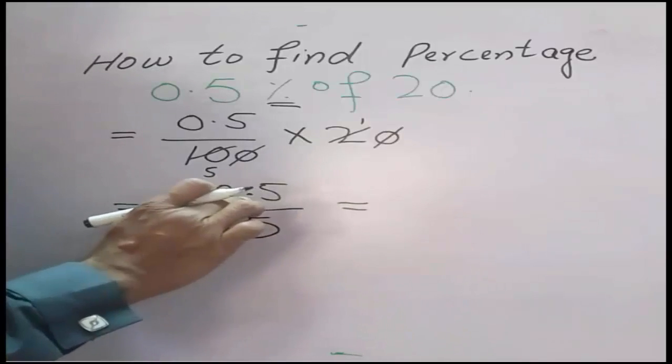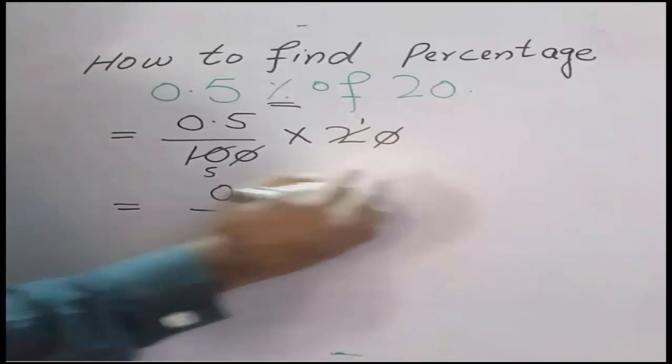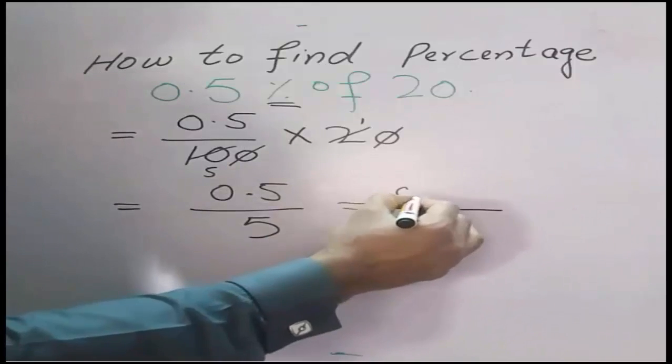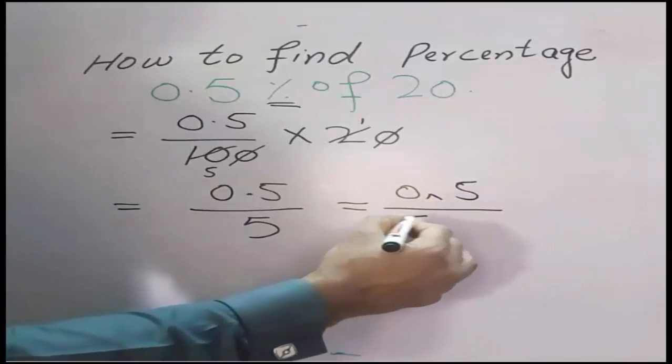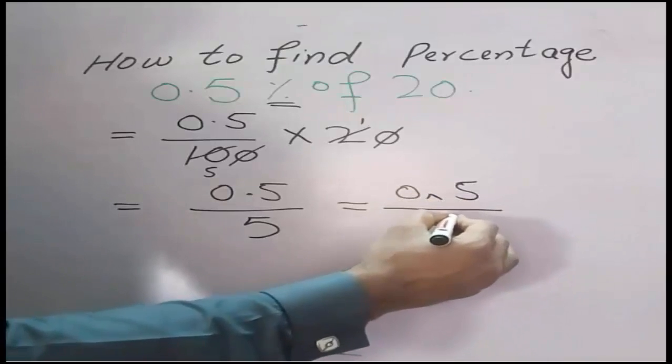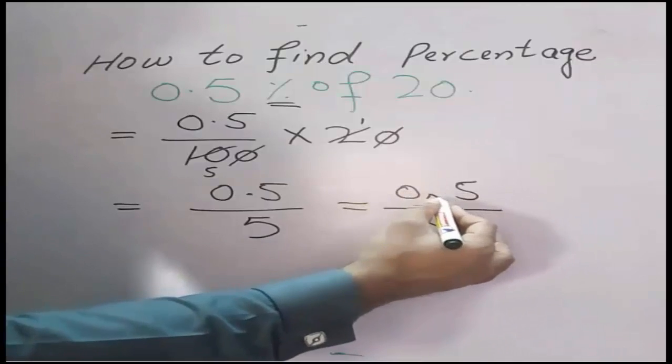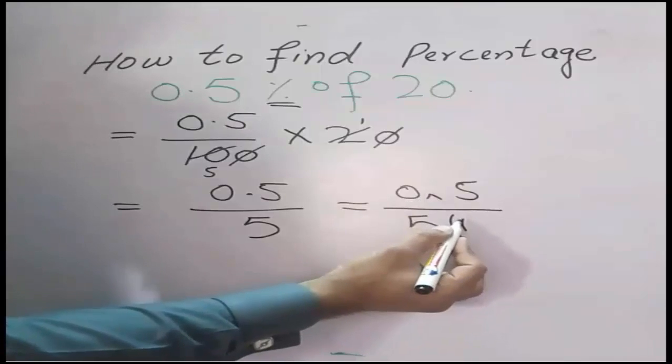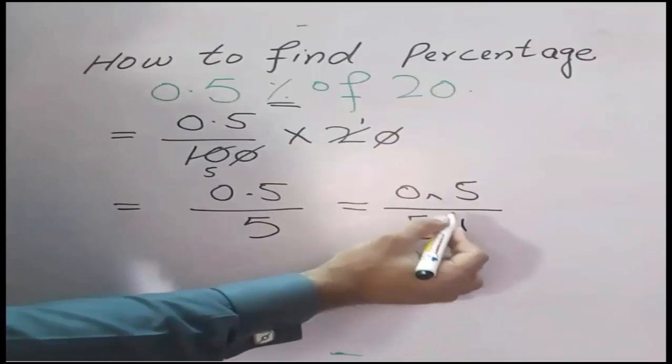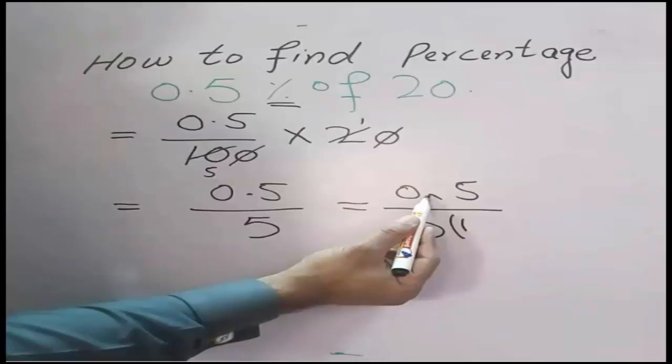Again remove this sign, this decimal point. When we remove this sign, put 1. After removing the decimal, put 1 here and count the numbers after the decimal. It is one number, so put one zero here.